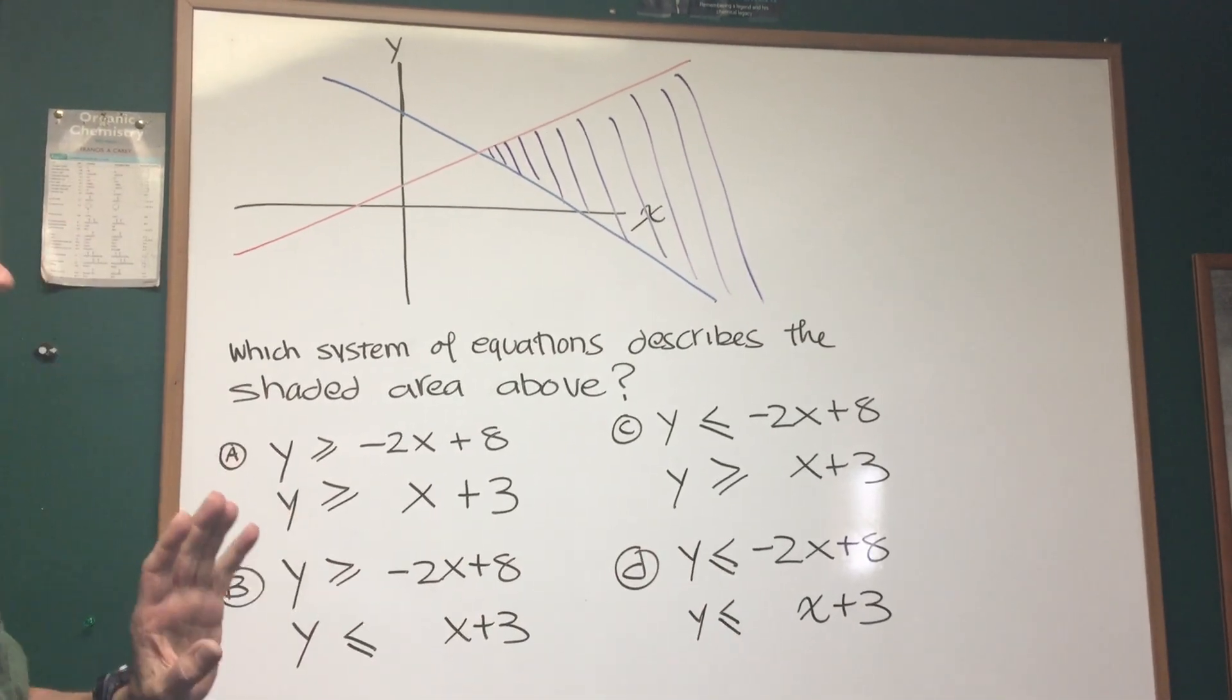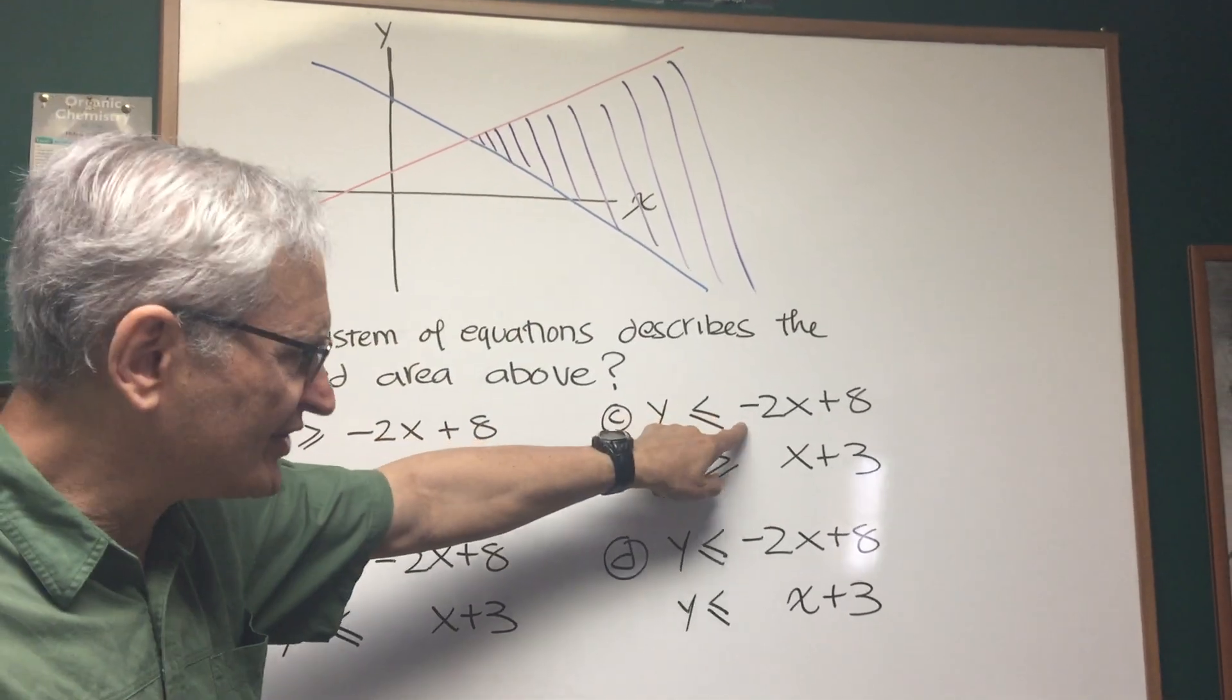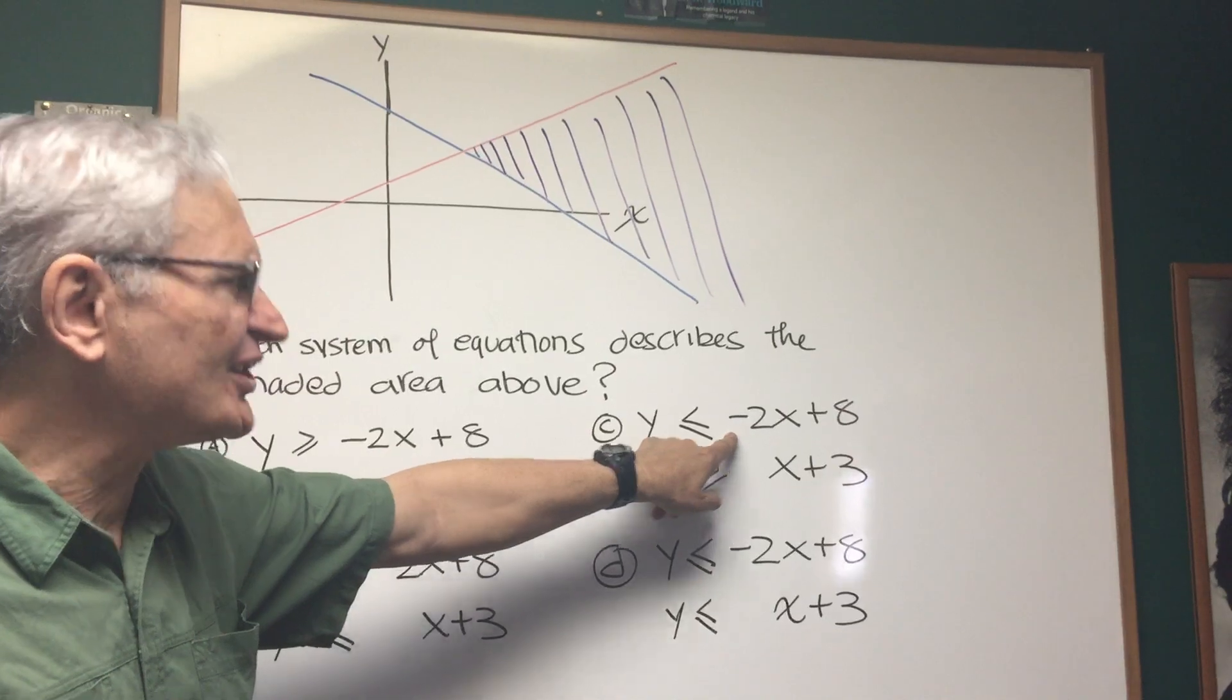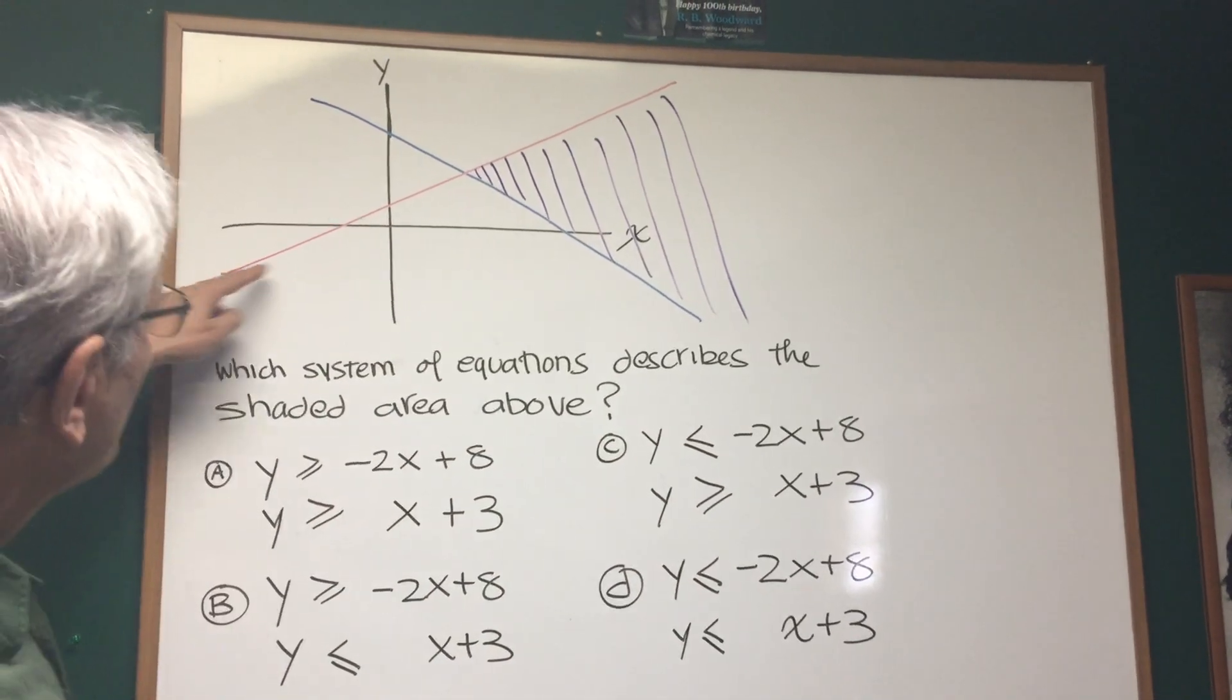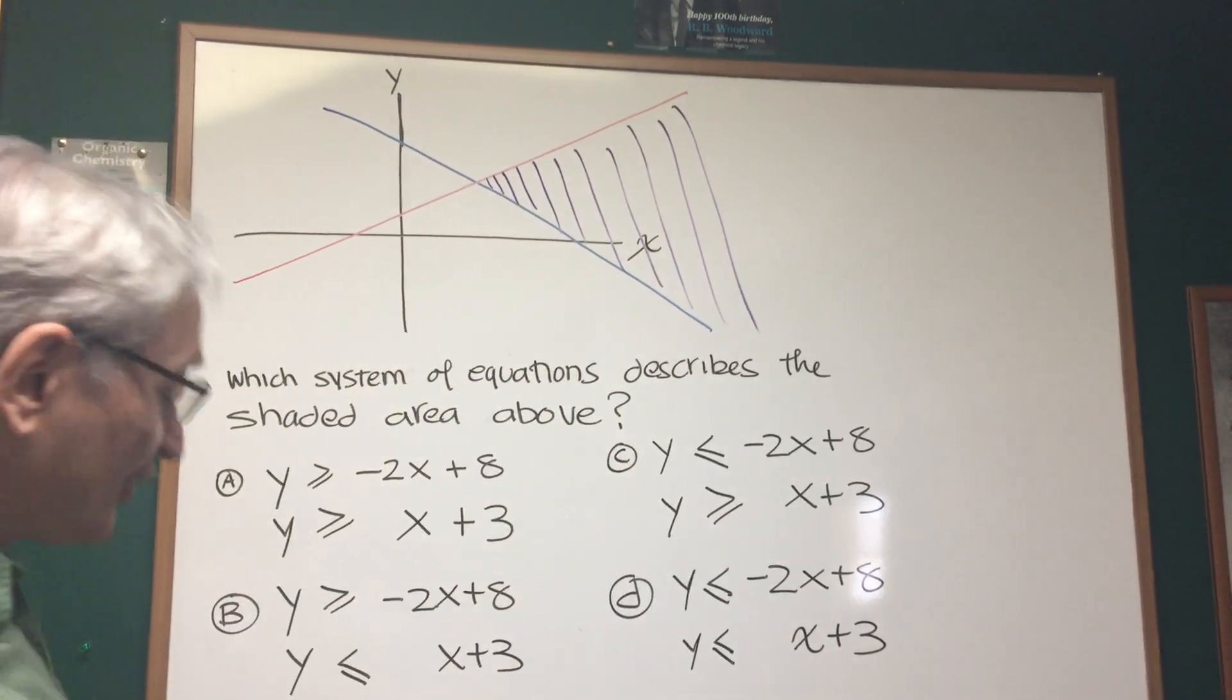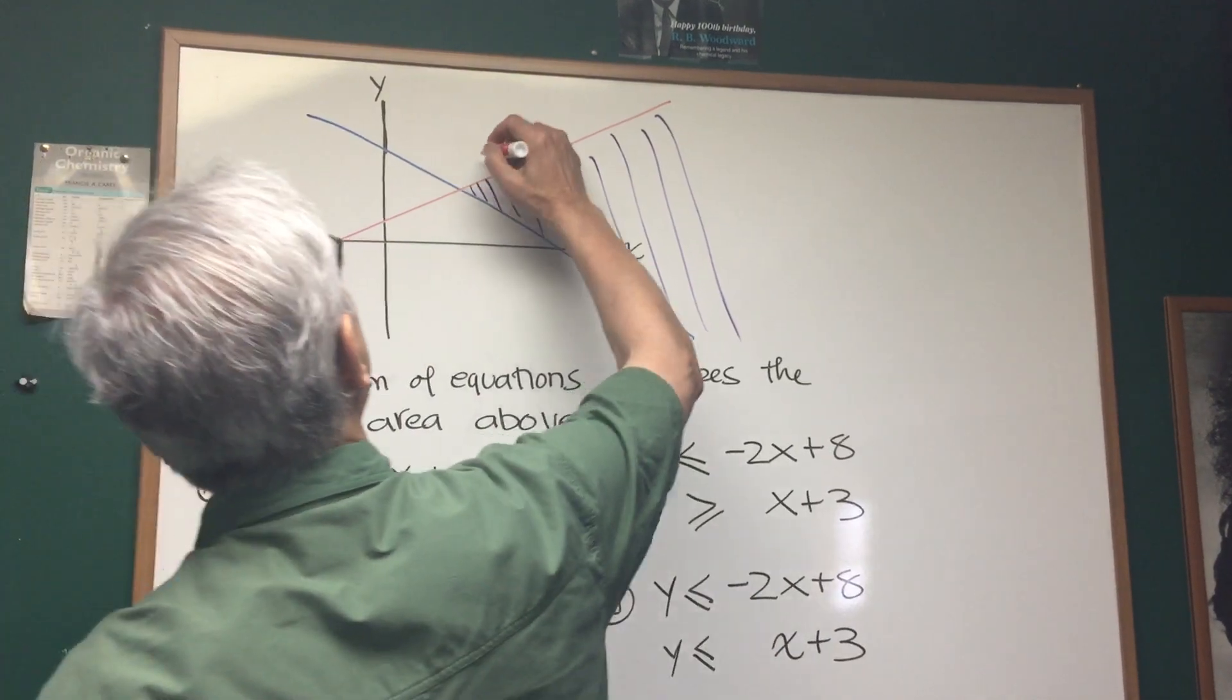Okay, first thing we want to do is identify which line is which. Which line is y equals negative 2x plus 8? Which line is y equals x plus 3? Well, the red line is a line of positive slope. So here is the line of positive slope, y equals x plus 3.